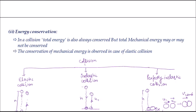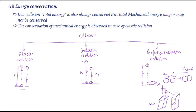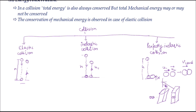We have also learned energy conservation concepts in collisions. Total energy is always conserved, but total mechanical energy may or may not be conserved. Conservation of mechanical energy holds in elastic collisions. Collision is divided into three types: elastic, inelastic, and perfectly inelastic. In elastic collision, the velocity of approach equals the velocity of separation — so a ball dropped from height h bounces back to the same height h.